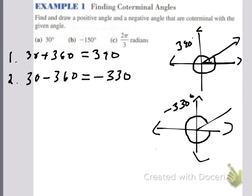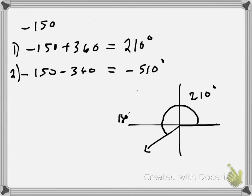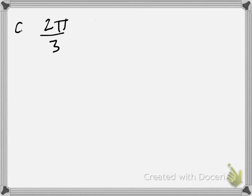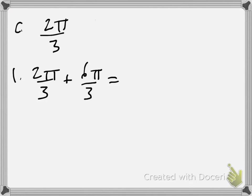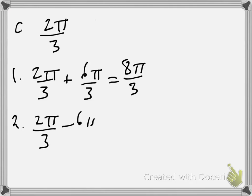Last one — we need 2 pi over 3 radians. We're going to add 2 pi, or 6 pi over 3, to get a common denominator. So 2 pi over 3 plus 6 pi over 3 gives us 8 pi over 3 — that's the positive coterminal. The negative coterminal is 2 pi over 3 minus 6 pi over 3, which equals negative 4 pi over 3.